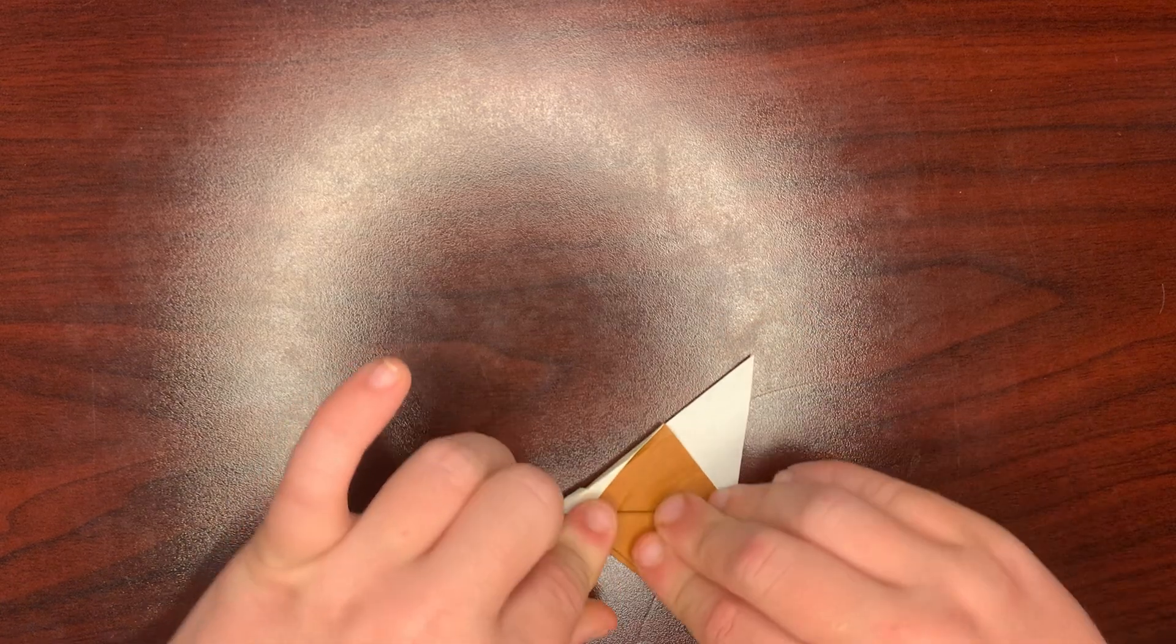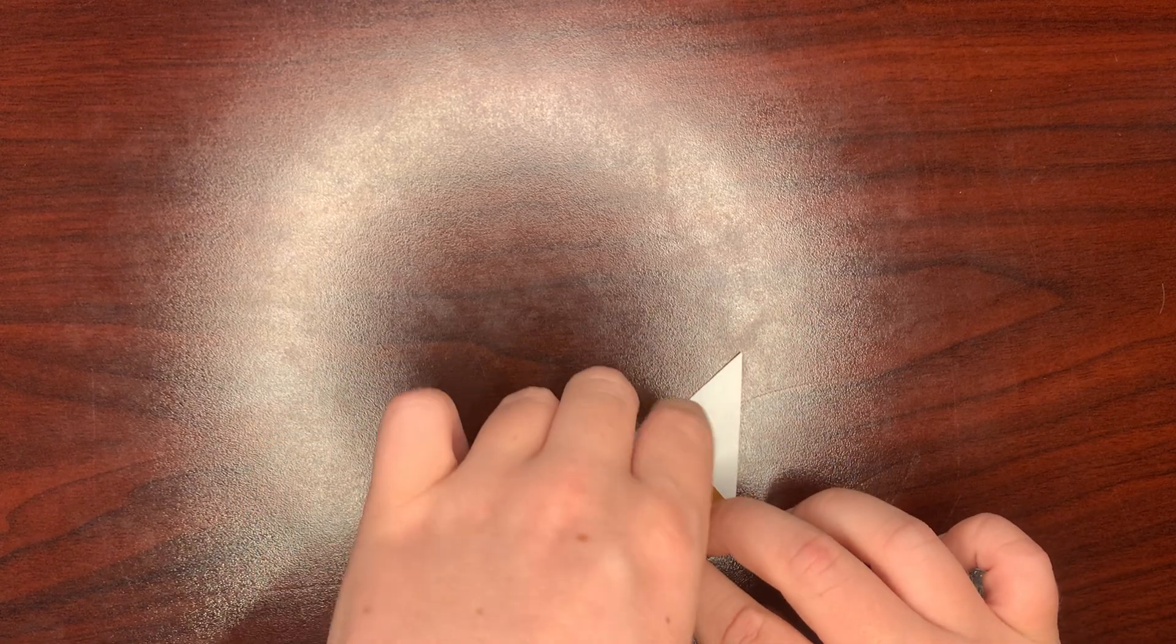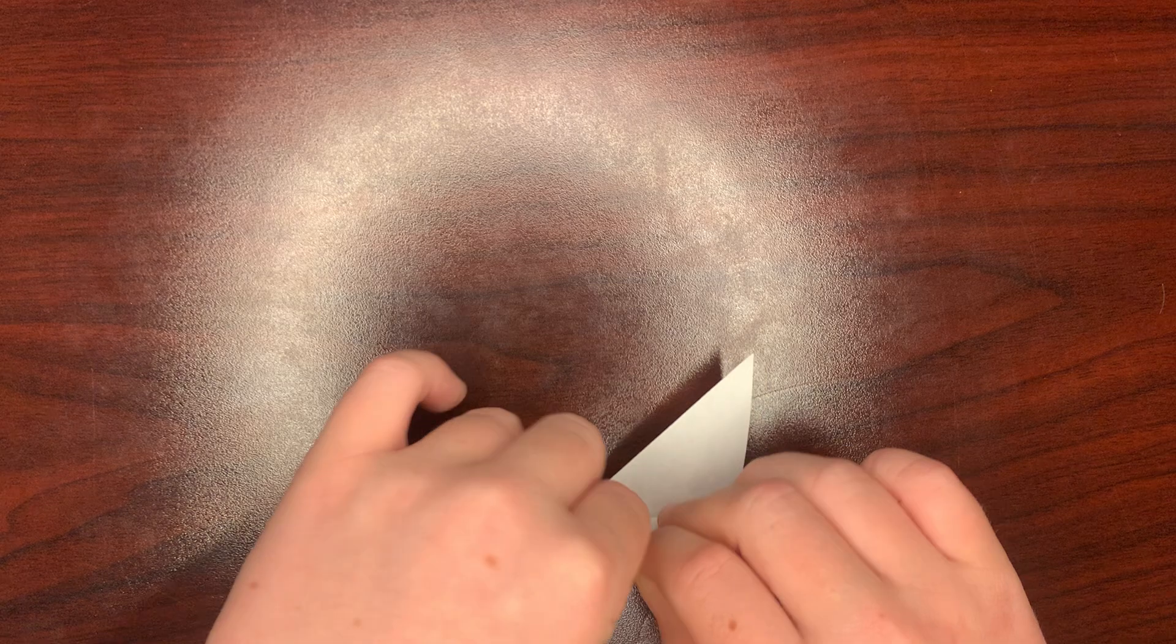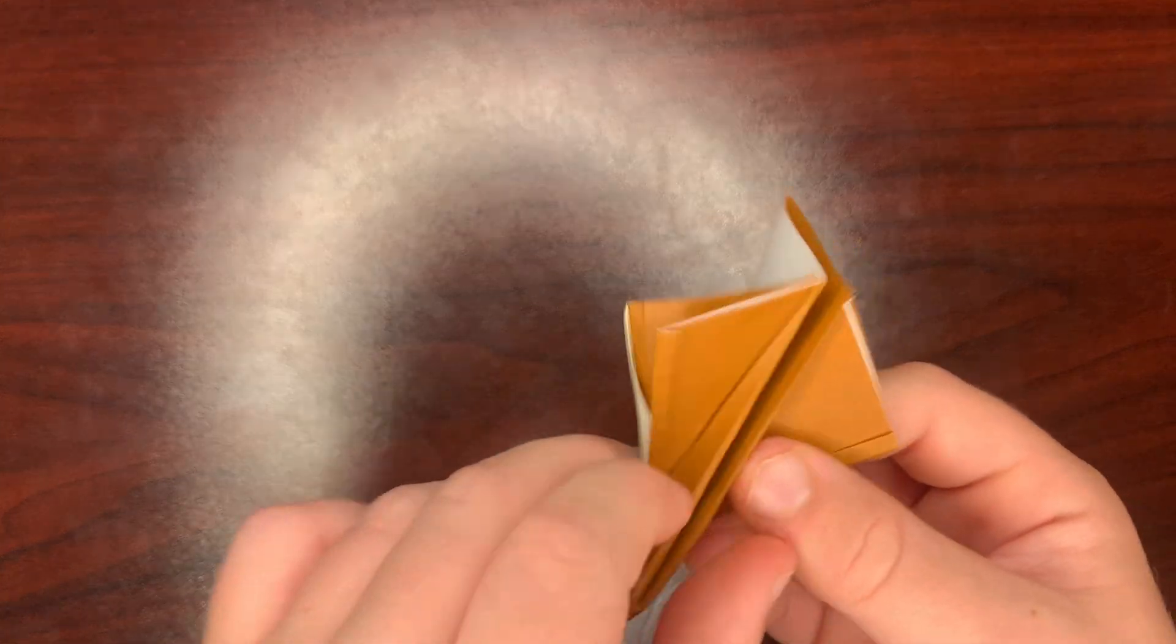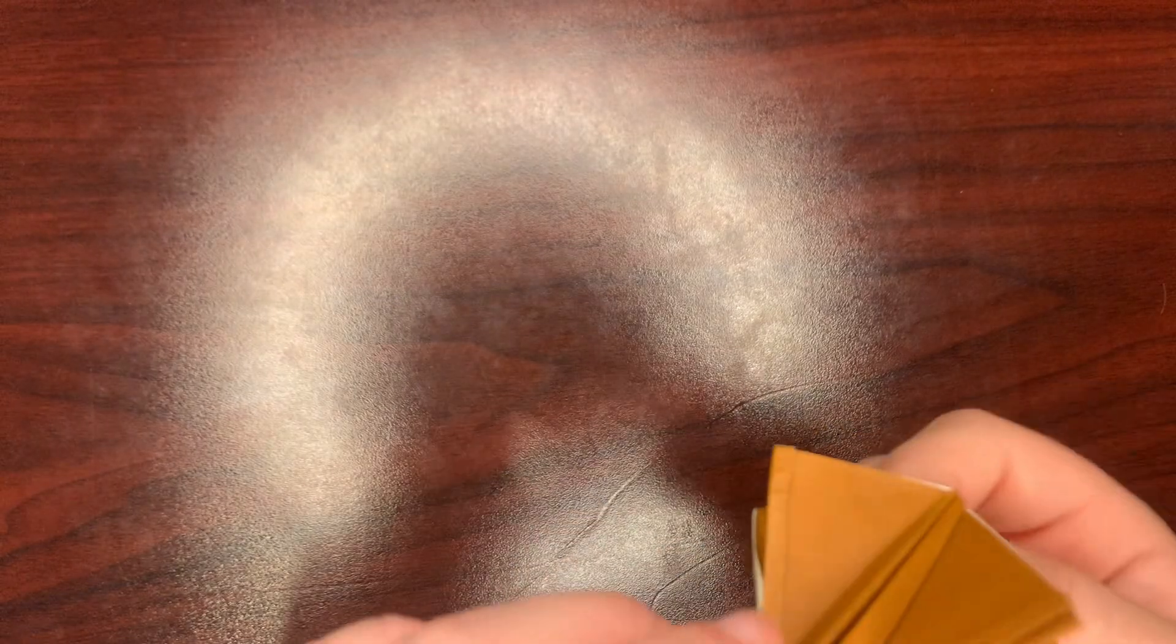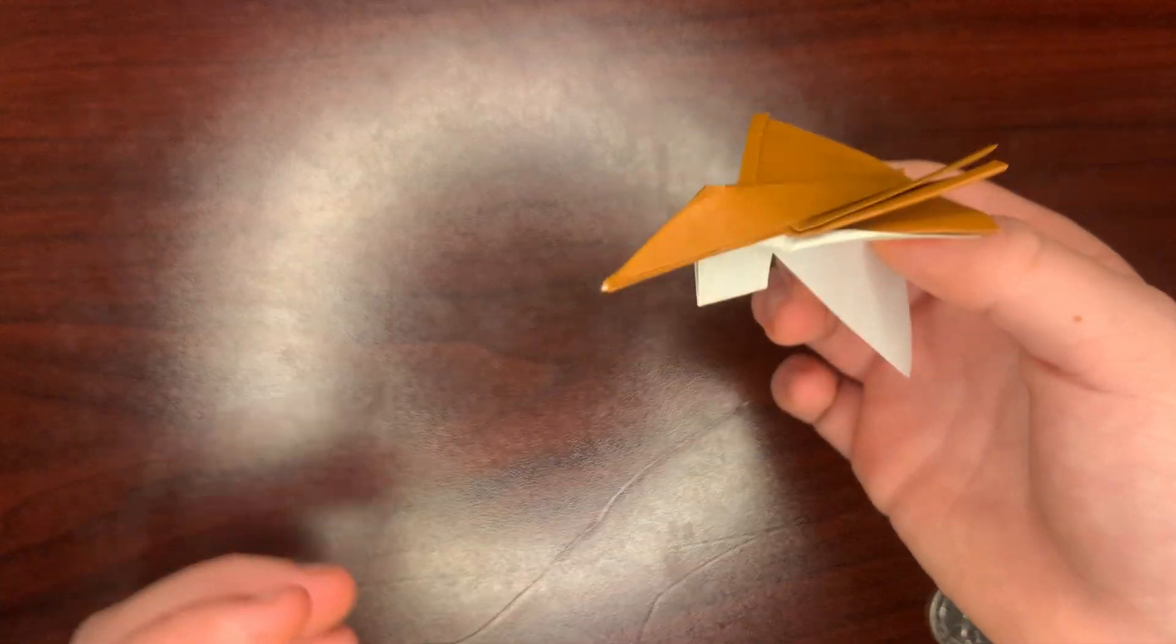Do the same thing on your side, just folding all the flaps up. Make sure not to miss one like I just did. You're almost done with the plane except you have to shape it better.